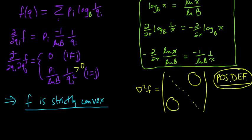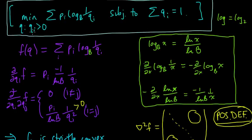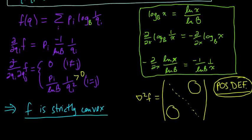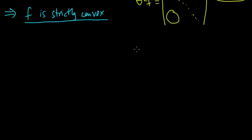We've established that our objective function f is strictly convex — that's a very good sign. Now let's think about the constraint set. The q_i's are positive and satisfy the constraint that they sum to one. What does that set of valid q's look like? You might recognize or guess that this set is in fact a convex set, and indeed it is. Let's see why.